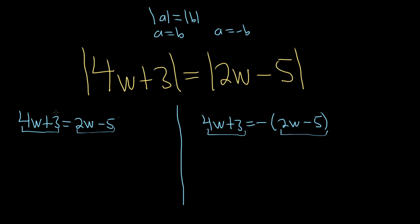So here we want to get all of the w's on one side by themselves. So we'll start by subtracting 2w. So minus 2w minus 2w. These cancel. 4w minus 2w is 2w. We still have the plus 3. And this is equal to minus 5.